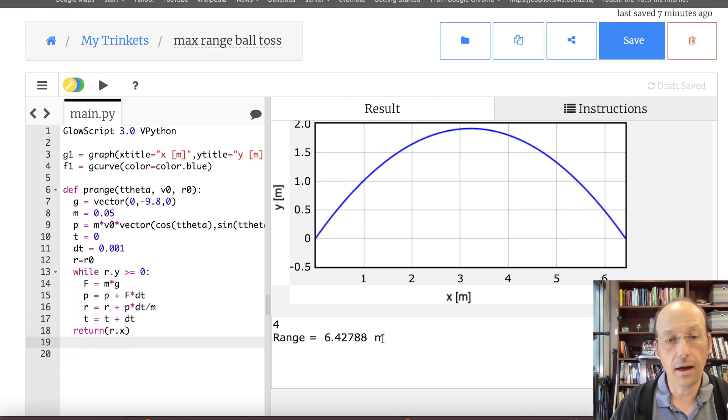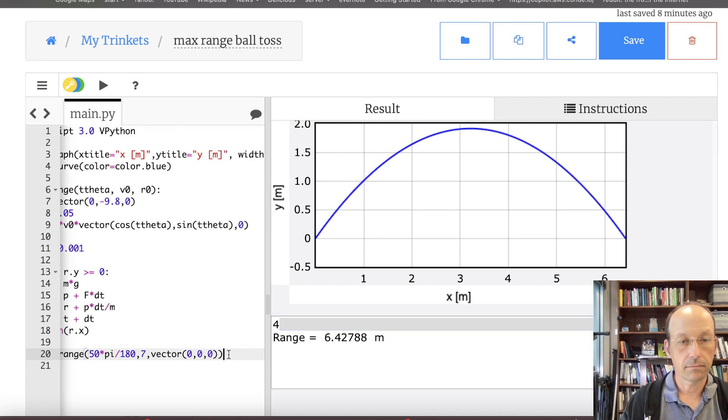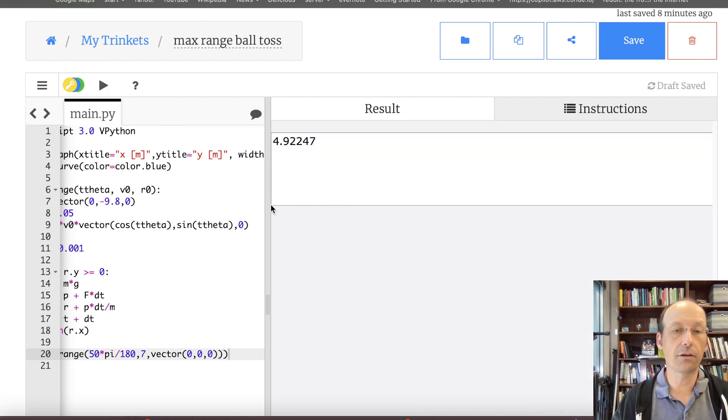Right here I had that's my range at 50 degrees. So let's just try and see if we get the same thing. So I'm going to say p_range, 50 times pi divided by 180. That's my angle theta. V0 was what did I say it was? I forgot. Seven. And then vector zero zero zero. And let's print that. I don't think I have the same values. But, I think it's working. I think it's working.